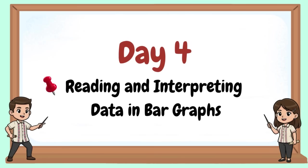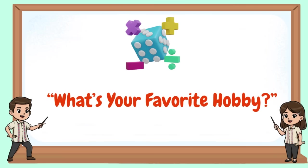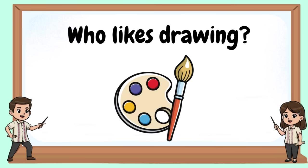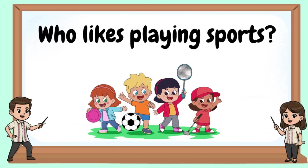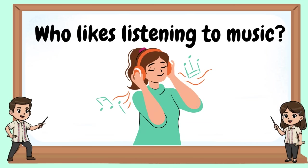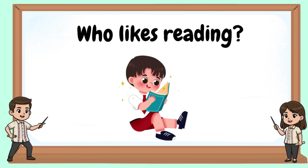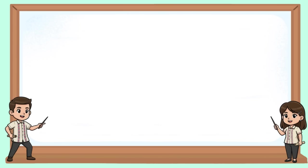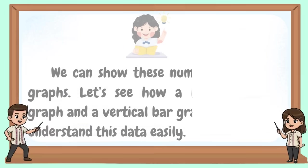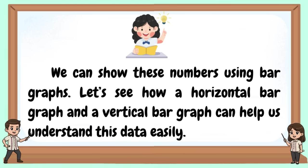Welcome to our day 4: reading and interpreting data in bar graphs. What's your favorite hobby? In this given data, 6 pupils like to draw, 8 like sports, 5 like music, and 4 like reading. We can show these numbers using bar graphs. Let's see how a horizontal bar graph and a vertical bar graph can help us understand this data easily.